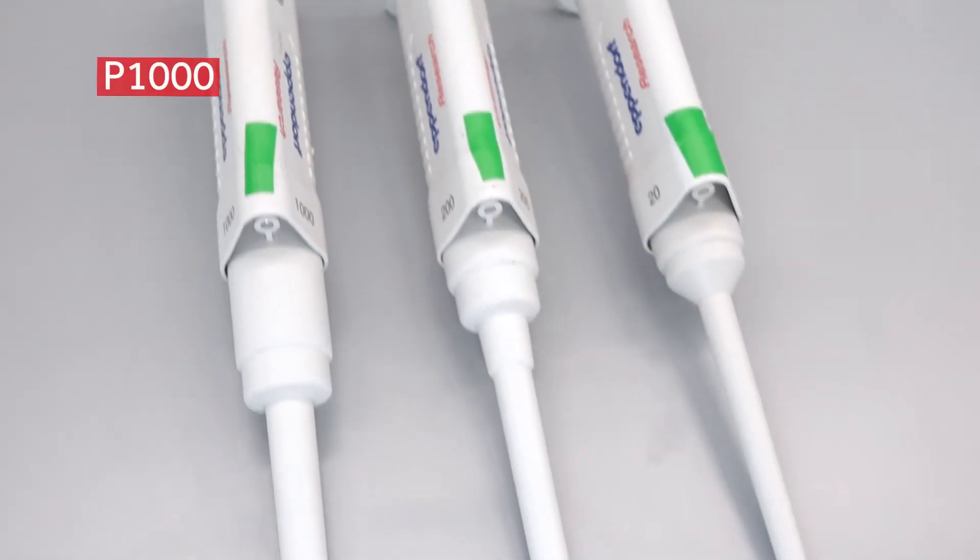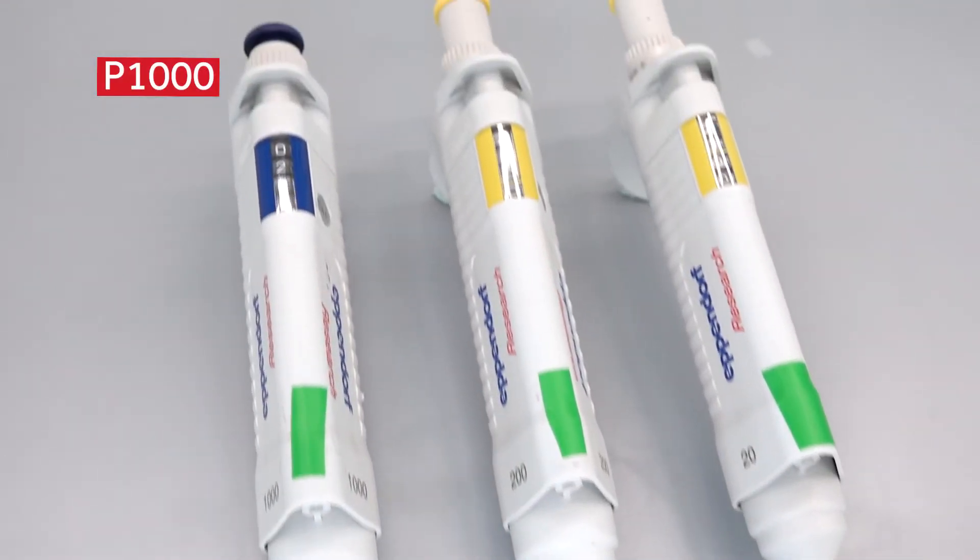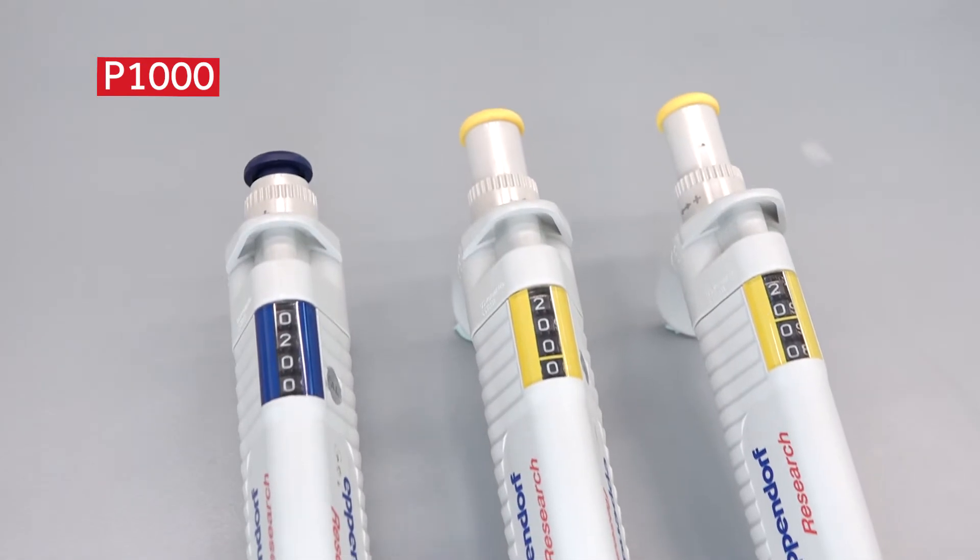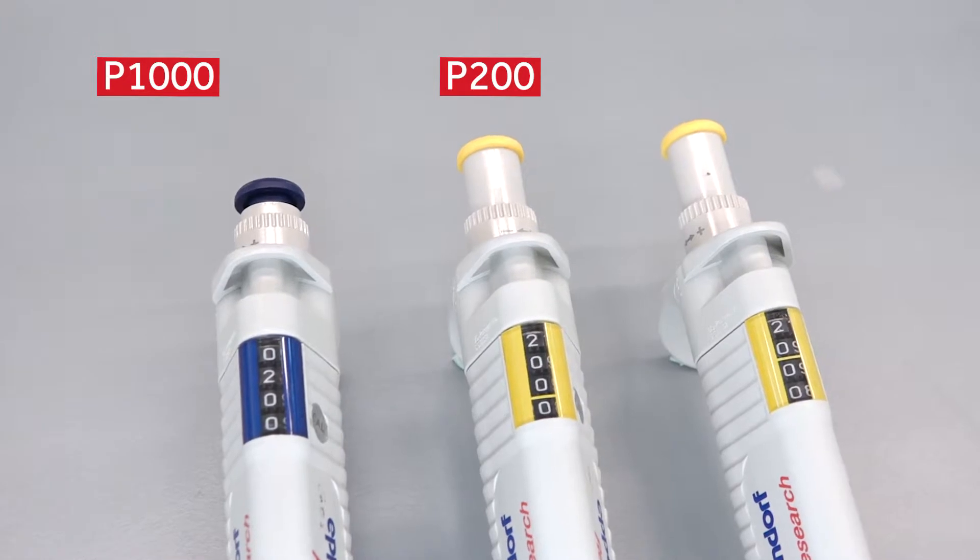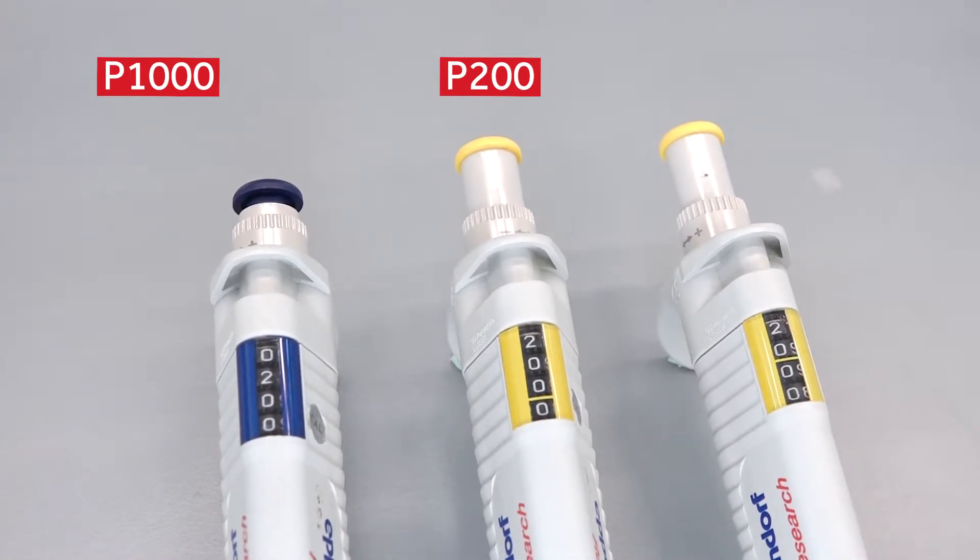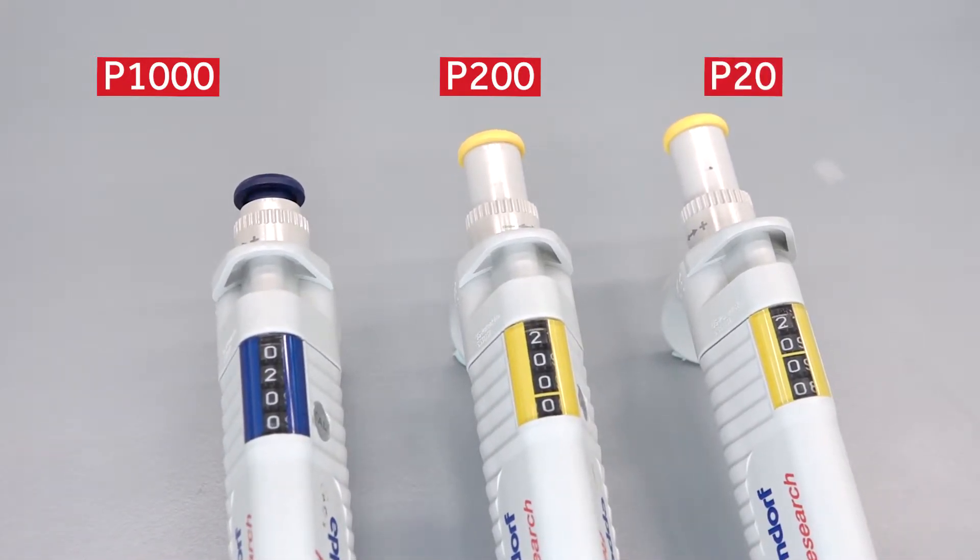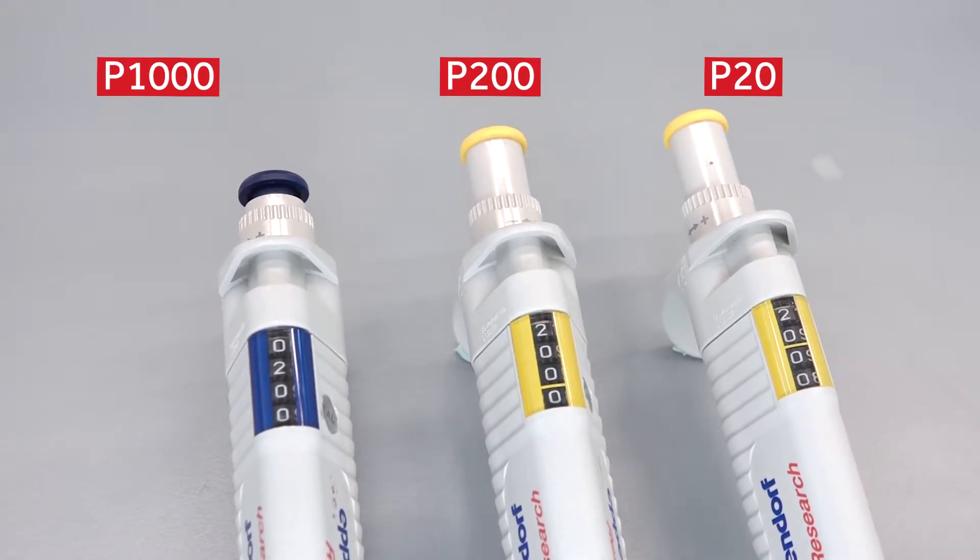For example, 0200 on a P1000 is 200 microliters, 200 on a P200 is 200 microliters, and 20 on a P20 is 20 microliters. So remember to set the dial for the correct volume when using different pipette types.